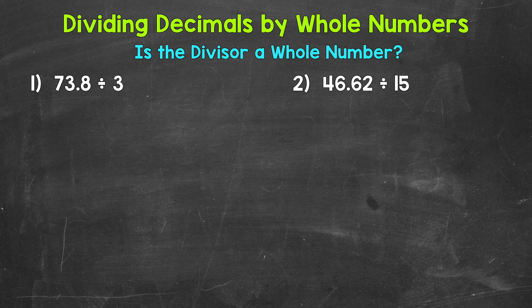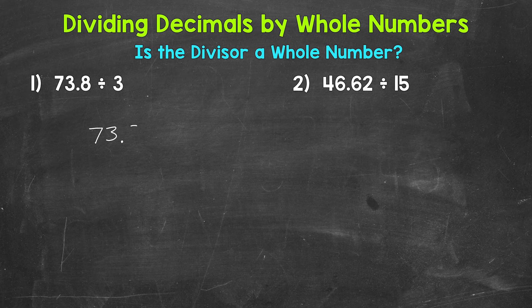Let's jump into number 1, where we have 73 and 8 tenths divided by 3. The first thing we need to do is set this problem up so we can go through the division process. 73 and 8 tenths is the dividend — the number we are dividing — so it goes under the division bar. 3 is the divisor, the number we are dividing by, and it goes on the outside of the division bar.